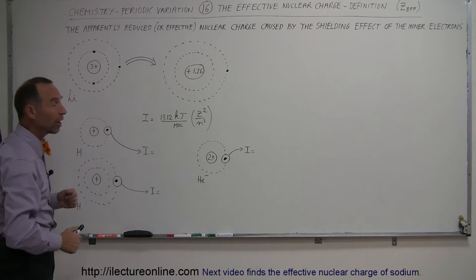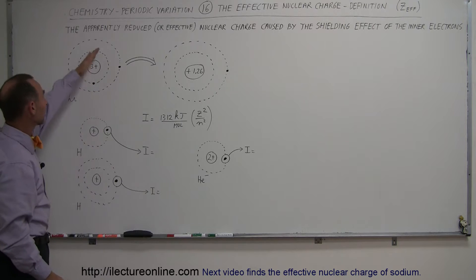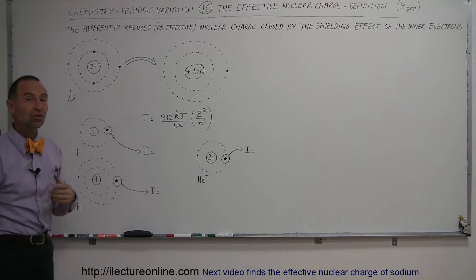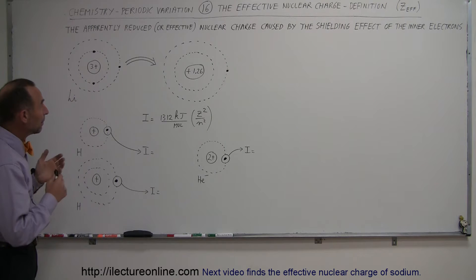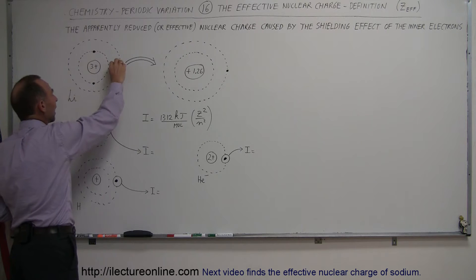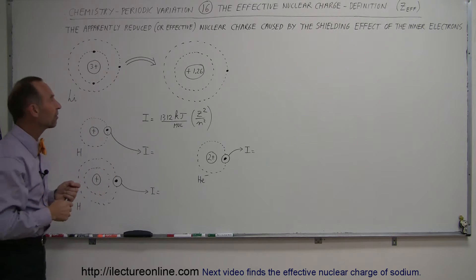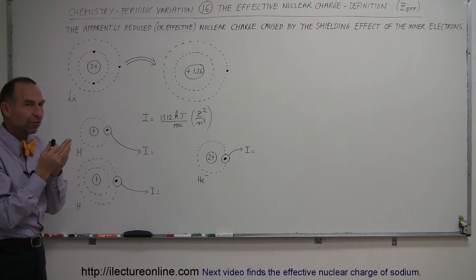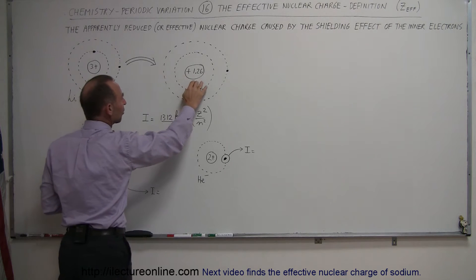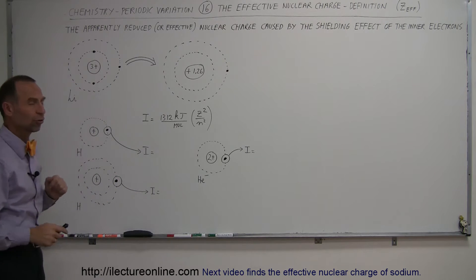In the case of lithium, there are three protons in the nucleus, so the nuclear charge is 3+, and there are three electrons: two in the innermost energy level and the third in the second energy level. Because of the shielding effect of the inner electrons, the outermost electron does not feel the full attractive force of those three positive charges. The effective charge it feels is more as if the nuclear charge is only 1.26 times the charge of a proton, instead of 3.